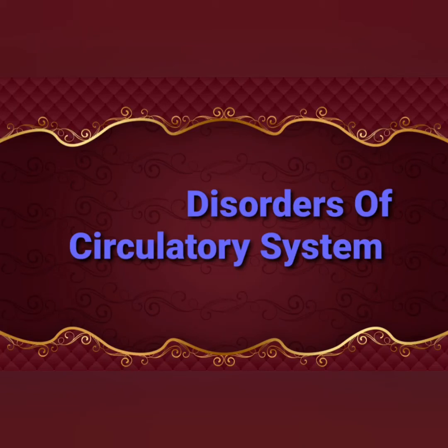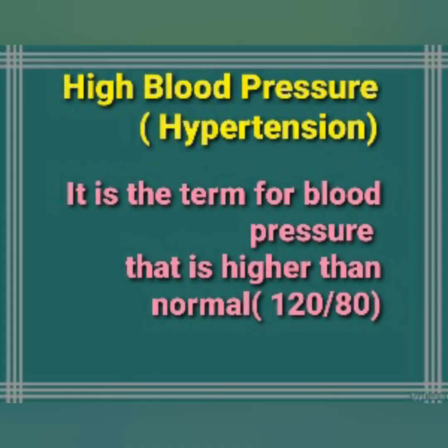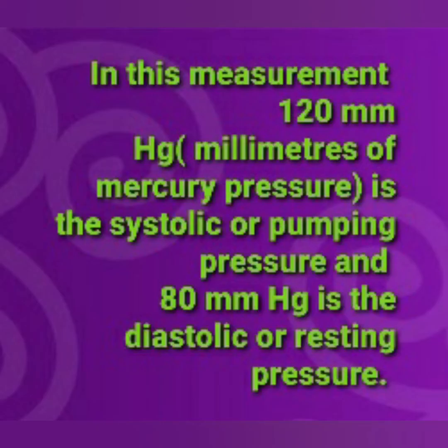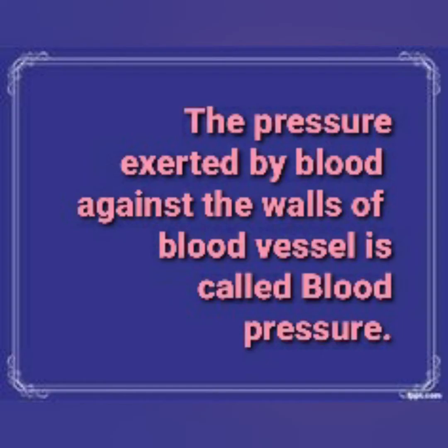Disorders of the circulatory system. First is about high blood pressure or hypertension. It is the term for blood pressure that is higher than normal, that is 120/80 mmHg. In this measurement, 120 mmHg is the systolic or pumping pressure and 80 mmHg is the diastolic or resting pressure.